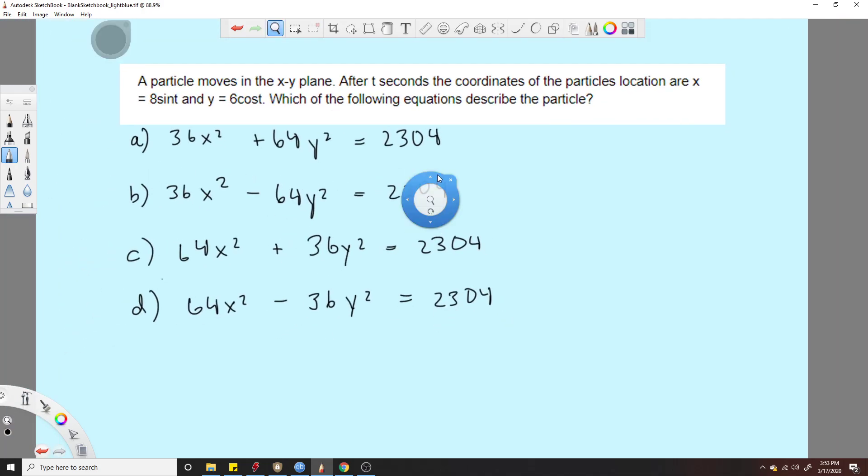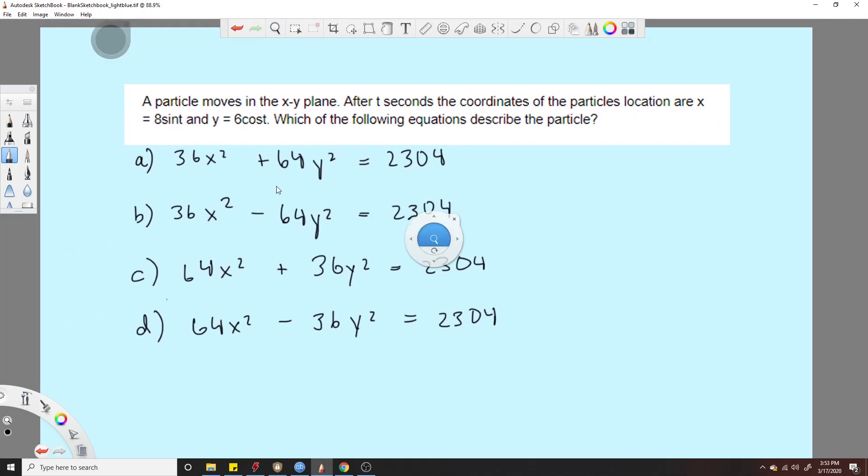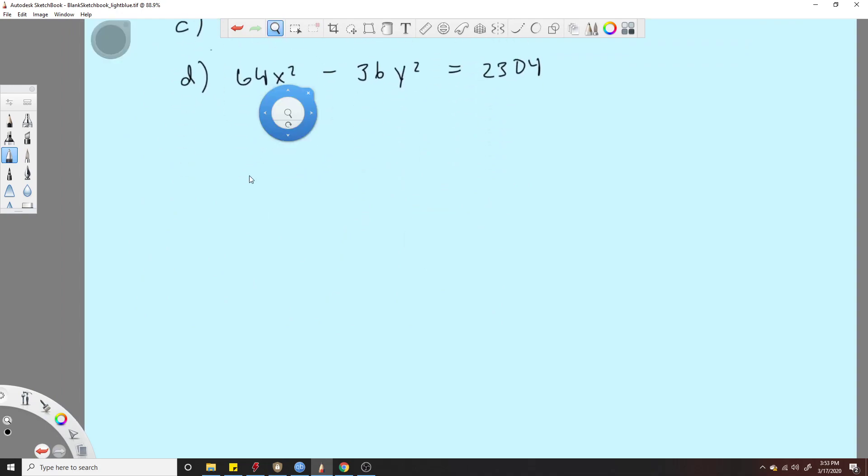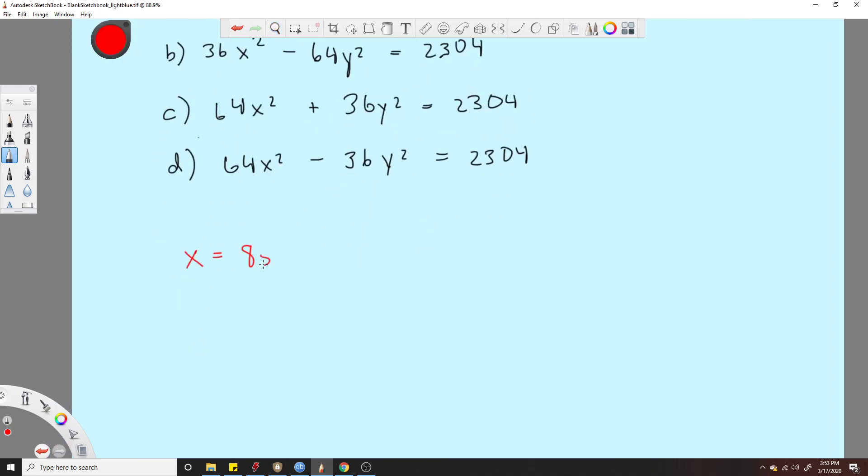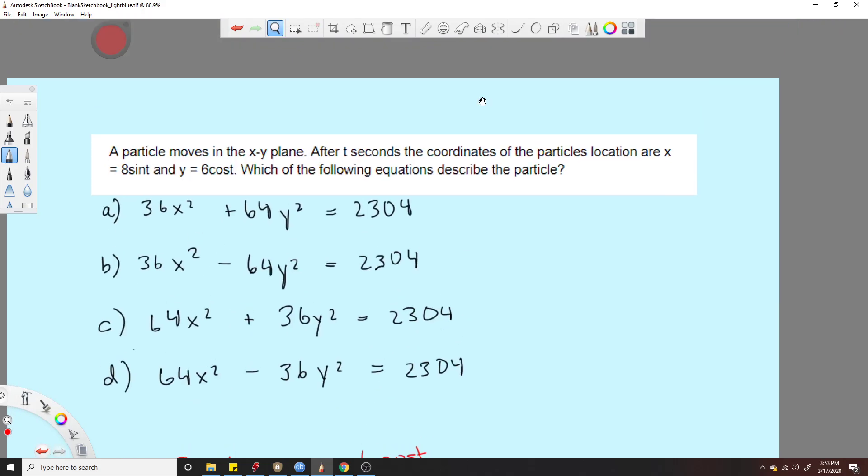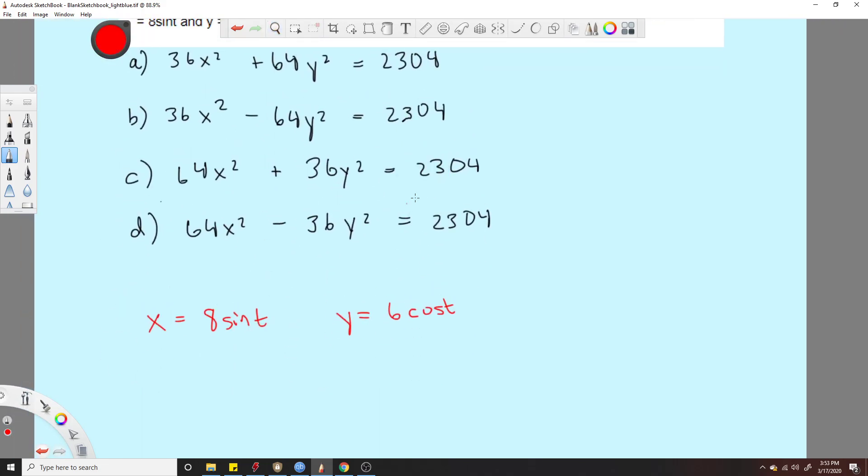And you also see that your two equations you're given are x equals, let me write them down here, 8 sine t and y equals 6 cos t, oh wait, was it 6 cos t? Yeah, 6 cos t.